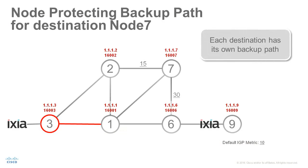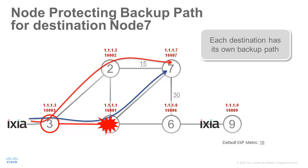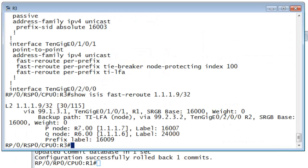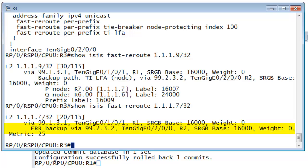Each destination has its own backup path. The algorithm is optimized to compute this in a smart and efficient way. In this example, node 3 can protect destination node 7 against the failure of node 1 by steering the traffic towards node 2. From there, it will continue its way to node 7. Since node 7 advertises the prefix SID, node 3 pushes the prefix SID label of node 7 on the backup path — no additional labels are needed. When verifying the backup path for destination node 7 on node 3, we indeed see the backup path via node 2.